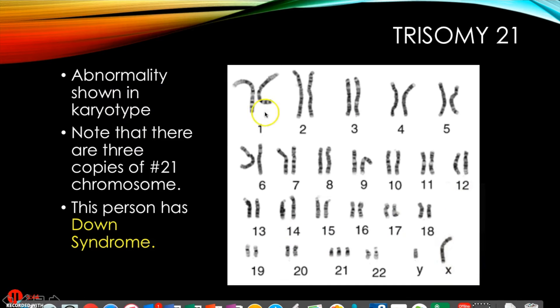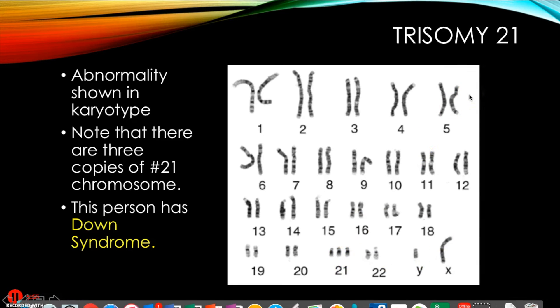In this case, we have a look here and you can see that there are three chromosome 21s. There's an X and a Y, and three 21s. This condition is known as trisomy 21, or Down syndrome.